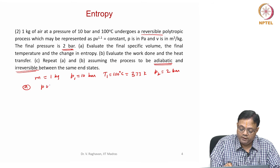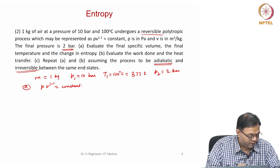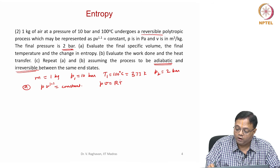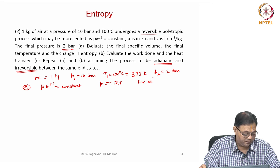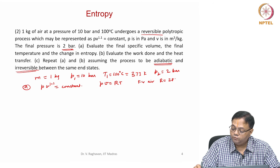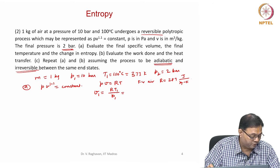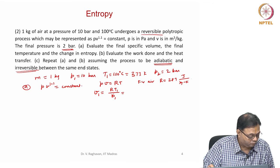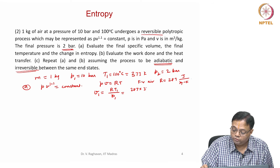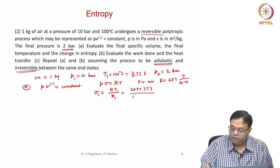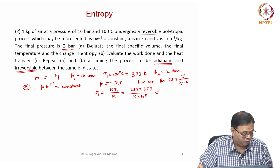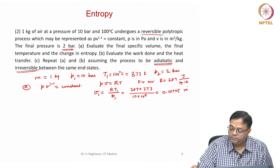For Part A, PV^1.1 equals constant is given. Using the ideal gas equation of state PV = RT, and for air R equals 287 J/(kg·K), we find V1 = RT1/P1 = 287 × 373 / (10 × 10^5) = 0.10705 cubic meters per kg.